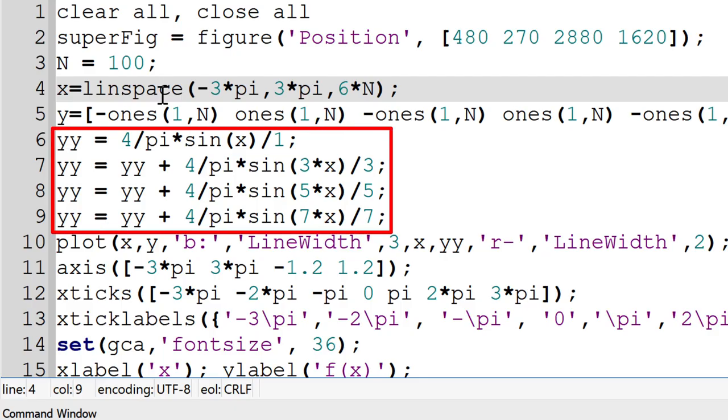You can continue to add the higher order terms manually, but this approach takes some efforts if you want to increase the order quite a bit high. N equal to 31, 51, or 101. To minimize this effort, you can use a loop statement.